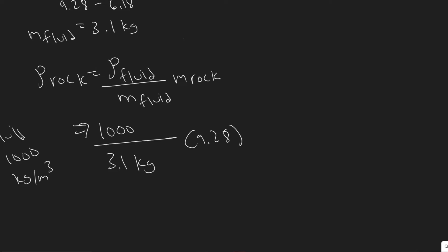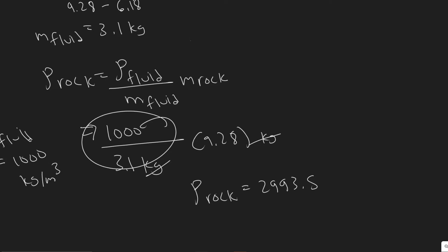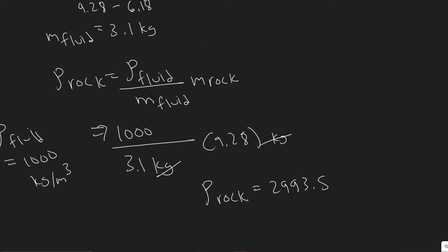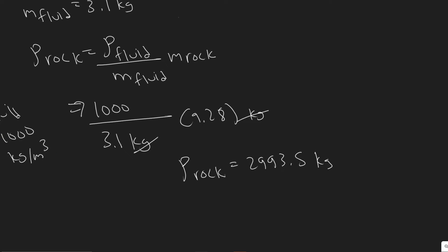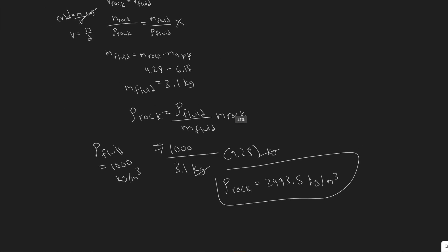When you plug this into your calculator, you get the density of the rock equals 2,993.5. Keep in mind the units: the kilograms from the mass of the fluid and the mass of the rock cancel, and you're left with the units of the density of the fluid — kilograms per meter cubed. So the density of the rock is approximately 3,000 kilograms per meter cubed.